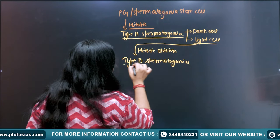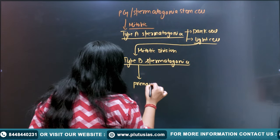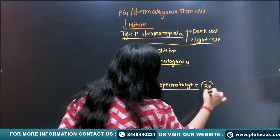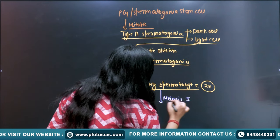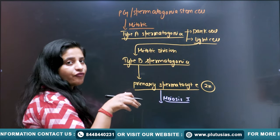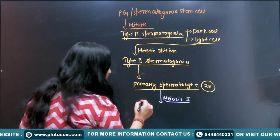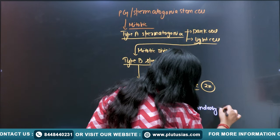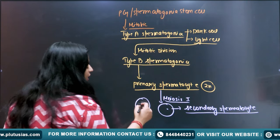From Type B spermatogonia, mitosis continues and some cells become the primary spermatocyte. The ploidy of the primary spermatocyte is 2N. This primary spermatocyte undergoes meiosis I, and the prophase phase is quite long - about 20 to 22 days. This results in a reductional division and the cell becomes the secondary spermatocyte. The ploidy of the secondary spermatocyte is N. Males have 46 chromosomes including allosomes - sex chromosomes X and Y. The sex of a baby is completely dependent on the male, because females only have XX chromosomes.